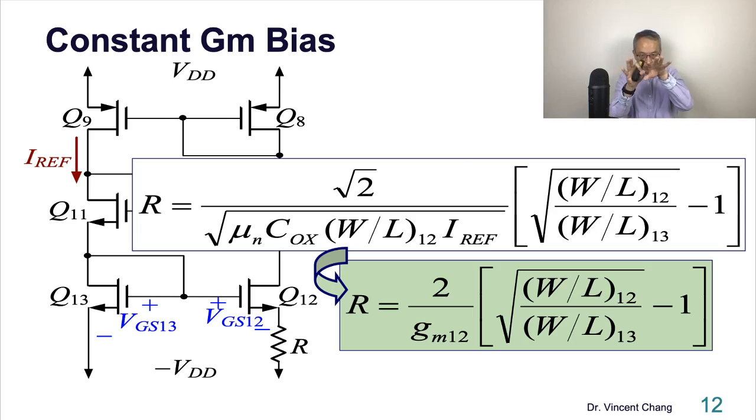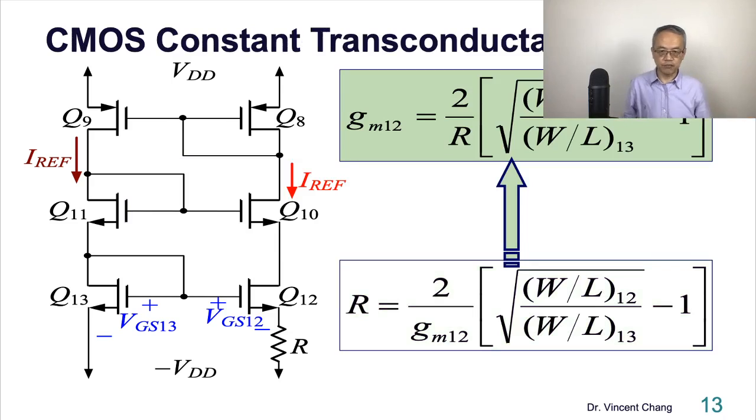Actually, the big square root in the denominator represents the transconductance gm12. I assume you are very familiar with those kind of equations you learn from semiconductor devices. All right, so now here's the outcome, the final result. What do you see?